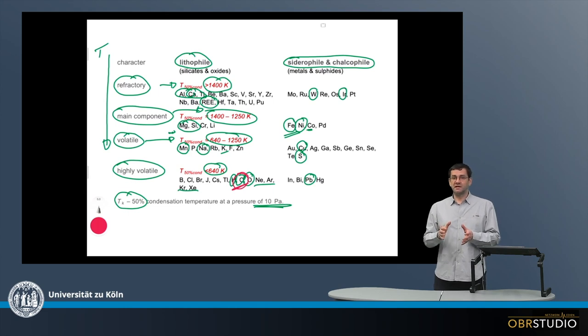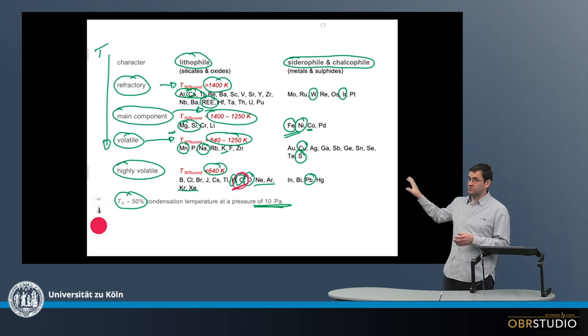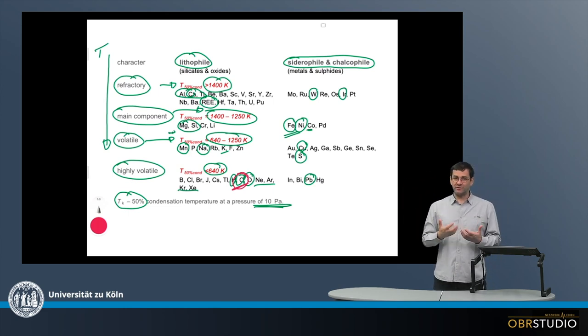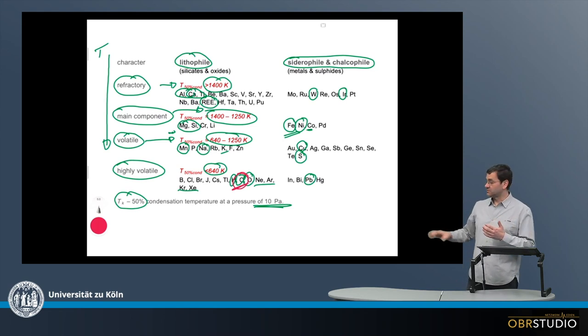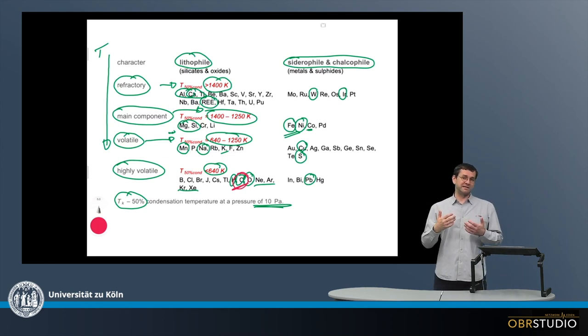This means that when we look at these cosmochemical characteristics, this gives us a very good idea, but it does not mean that it directly relates to a condensation sequence because oxygen, although highly volatile and should condense at very low temperatures, already condenses at the highest temperatures, together with refractory elements.